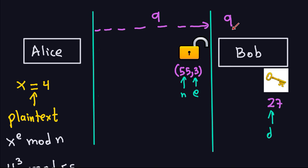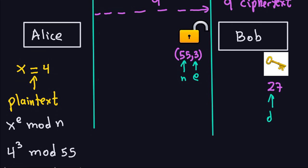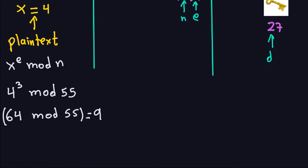The ciphertext is 9. This number 9 is sent to Bob through the insecure channel. Once Bob receives the ciphertext, he has to decrypt the message. He does it similarly to what Alice did: he takes the ciphertext to the power d, which is 27, so he computes 9 to the 27th power, and then takes modulo 55.